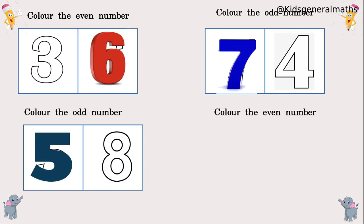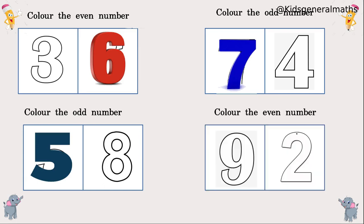Next we are going to colour the even number. We know that even numbers end with 0, 2, 4, 6, or 8. So which one is the even number here? 2 is an even number, so we are going to colour the 2.